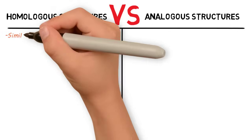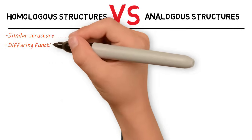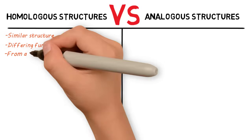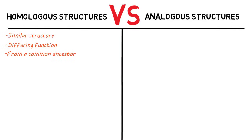Homologous structures have a similar structure, meaning their anatomy or bone structure is similar. They have a differing function — so a wing versus an arm versus a fin, for example. And they form from a common ancestor, so they have a common ancestor that gave them that structure.